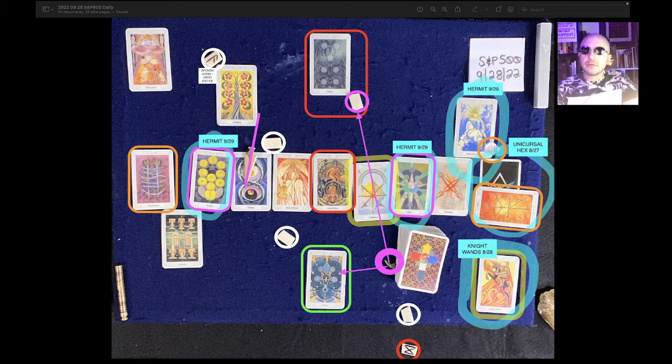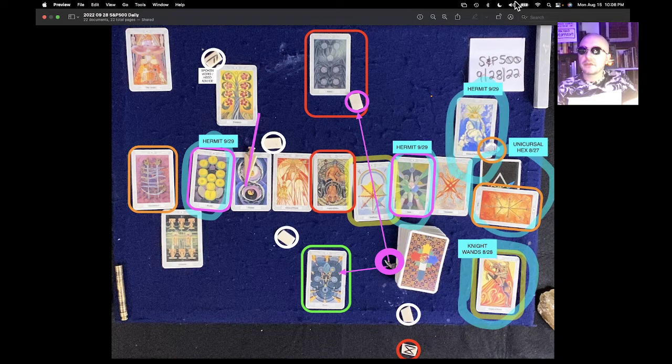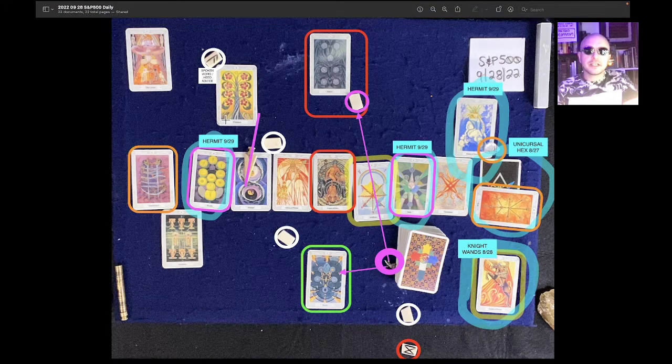This is the S&P 500 one-day reading for September 28, 2022. It's currently August 15, 2022, 10:08 PM Eastern Time.